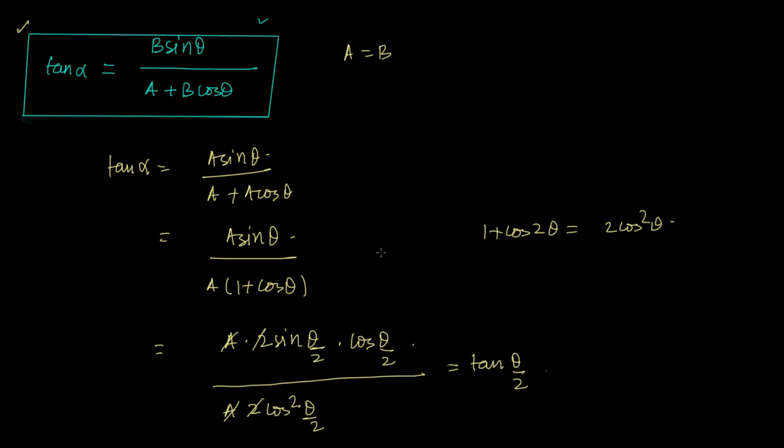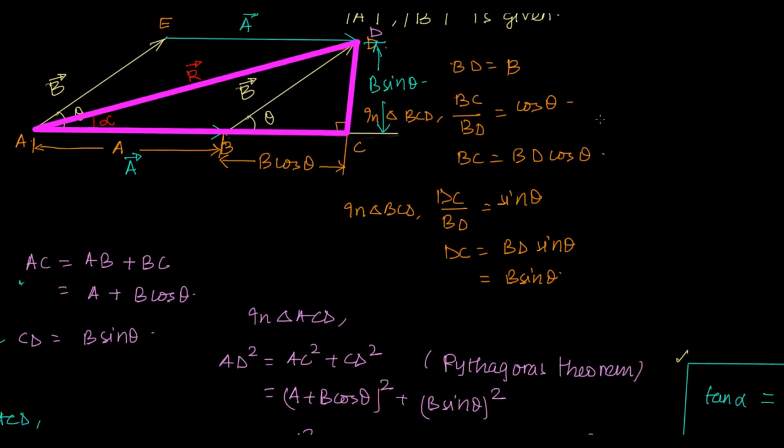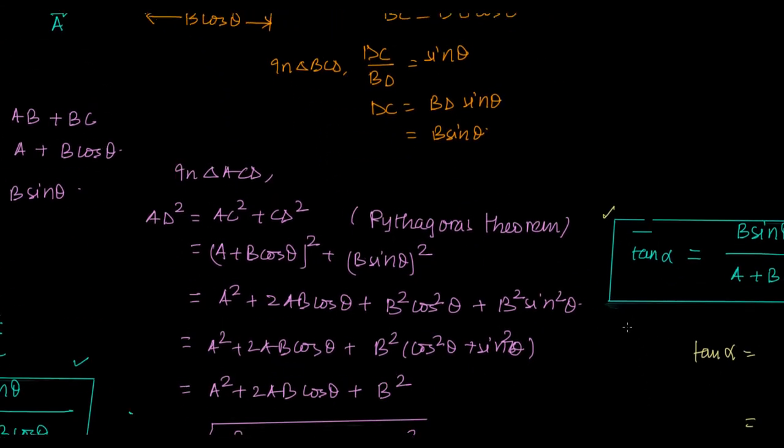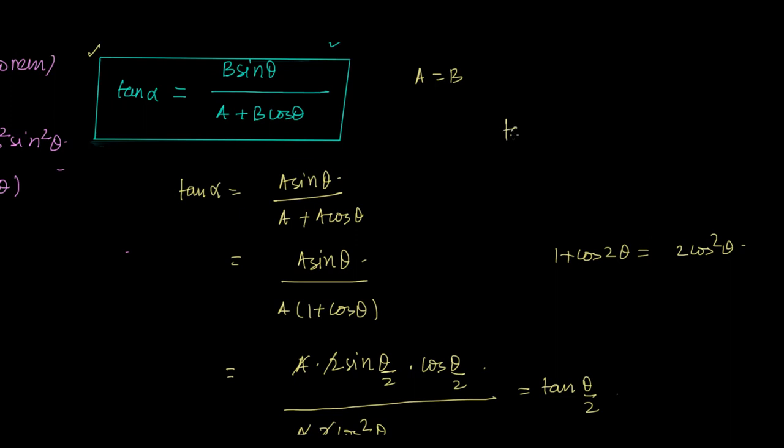Now what does that mean? Let us come back to the original figure and try to understand. It is just trying to tell you that if these two vectors, this vector A and this vector B are of the same length, then this resultant will be a bisector of the angle between the two. It is saying that tan alpha is equal to tan theta by 2. If tan alpha is equal to tan theta upon 2, it means that alpha is equal to theta by 2.